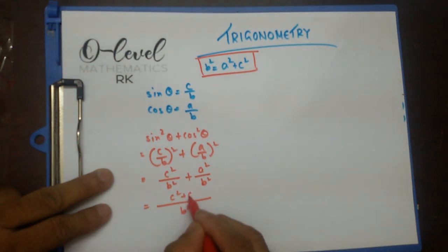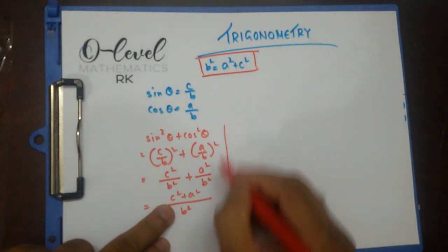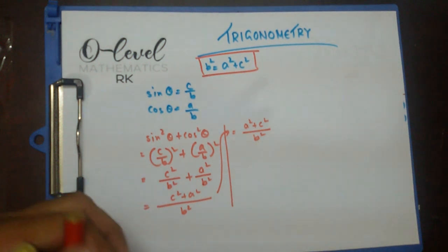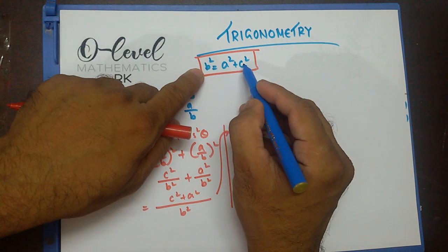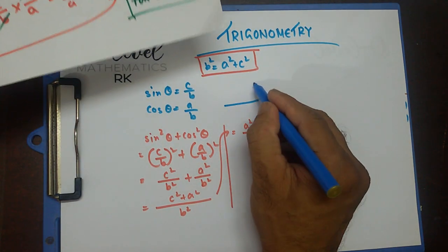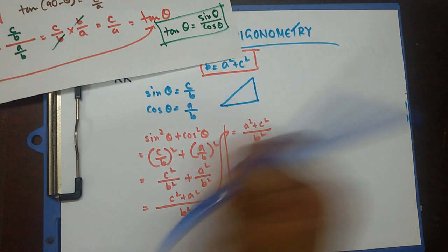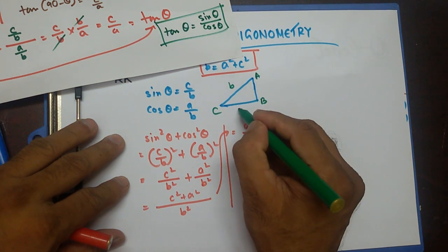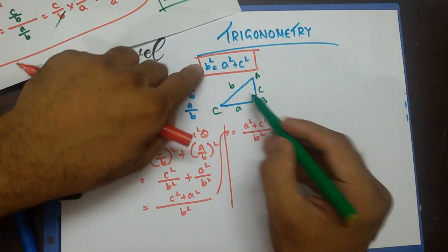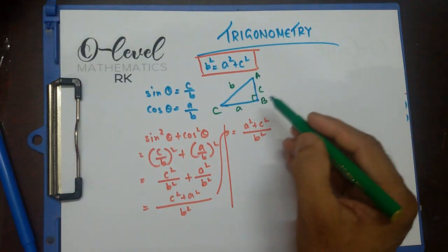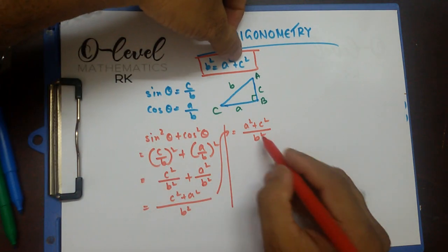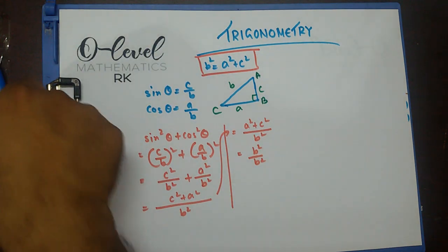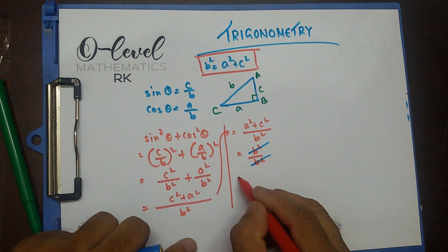This is going to be c squared plus a squared all over b squared. Now c squared plus a squared can be written as — from Pythagoras theorem — a squared plus c squared equals b squared. So I have b squared equal to a squared plus c squared. Let me just draw this triangle so you can see what is going on. If this is b, this is a, and this is c, then b squared equals a squared plus c squared. Now instead of a squared plus c squared, I can replace it by b squared, so I get b squared over b squared.